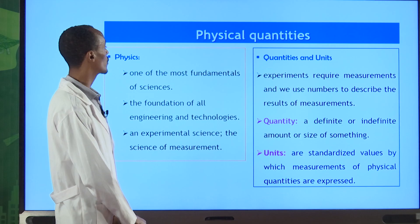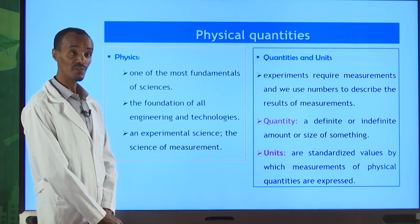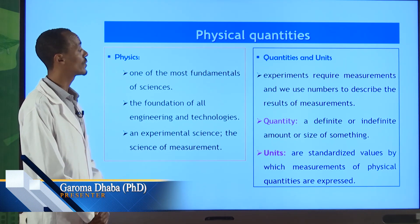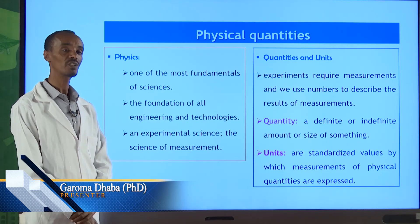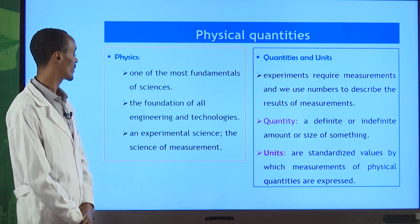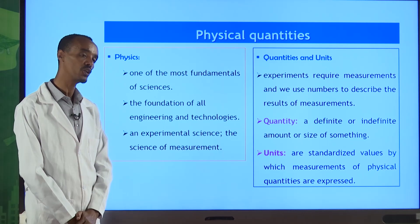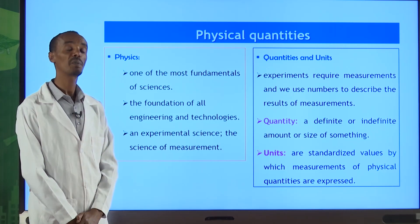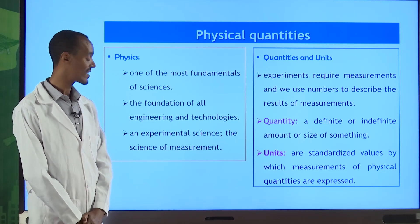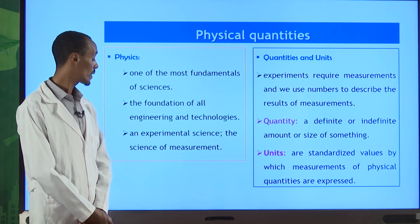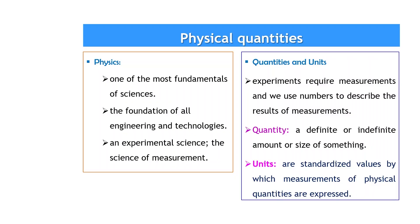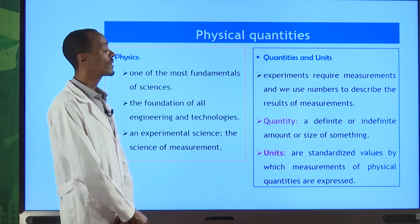Now let's start from physics. We are dealing with physical quantity. As we said in our first tutorial lesson, physics is one of the four most fundamental branches of science and it is the foundation for all engineering and technologies. Physics is an experimental science, so we have to make experiments, take measurements, and take the units of measurements with great care.